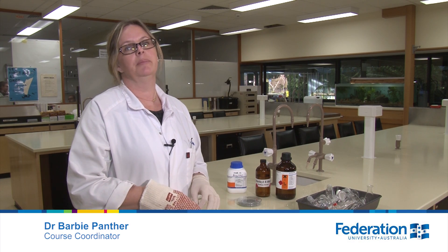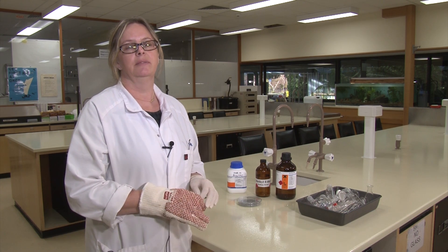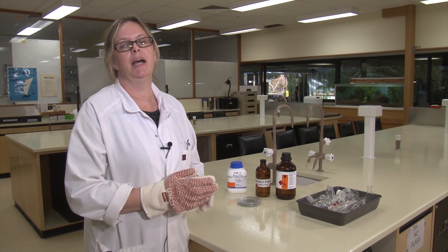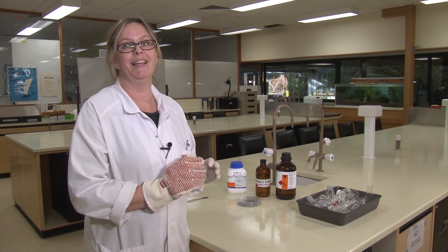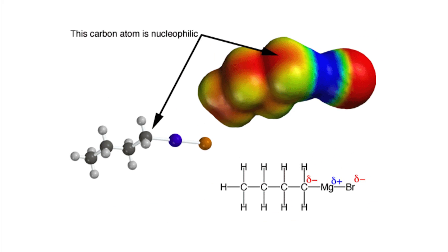A Grignard reagent is used to make carbon-carbon double bonds. Grignard reagents are made up of an alkyl group, a magnesium atom, and a halogen. What's interesting about them is that the carbon carries a slight negative charge, so it's really easy for it to react with another carbon that's got a slight positive charge.